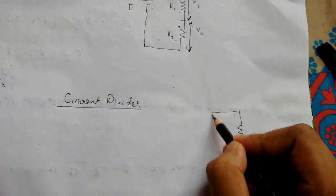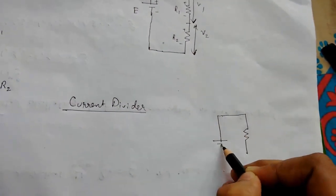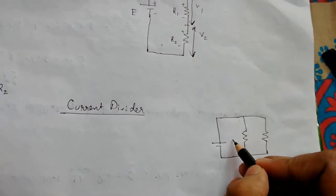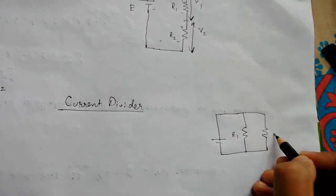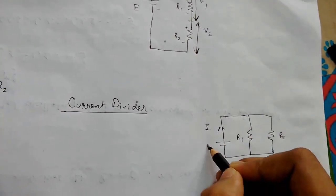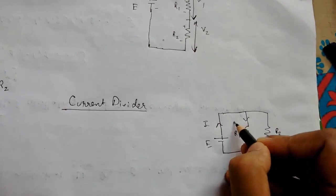Let me draw the circuit first. This will be something like this. So here it will be R1, here it will be R2.